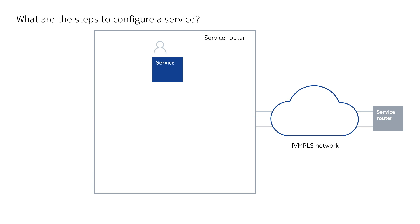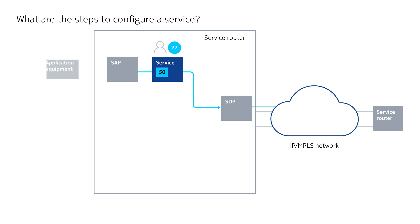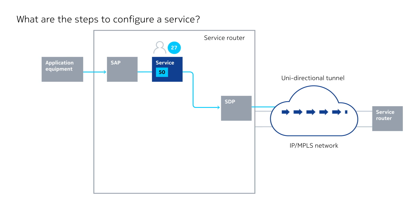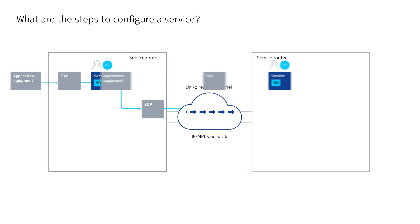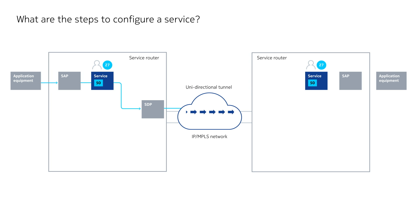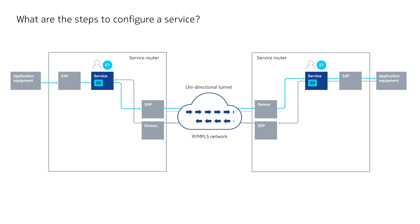There are several steps to configuring a service. First, we create a service with an associated customer ID. The next step is to create a SAP for the service and bind the service to an SDP. Incoming customer data through a SAP is then directed via the bound SDP into a service tunnel to reach the remote service router. Once the traffic exits the tunnel it will travel to the remote SAP and reach the remote customer equipment or circuit. The SDP can be reused for other services destined for the same remote router.